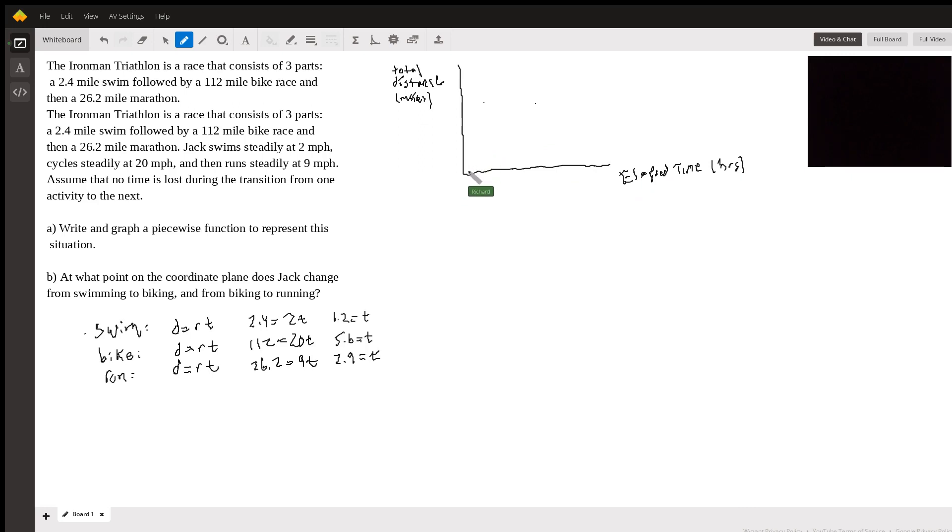And this is going to be in hours because those are the units that are given to us. So let's start him off swimming. Obviously, we're starting at the origin. At zero time, he's traveled zero distance. So we know that's a point. Fill that point in. And then we know that 1.2 hours later, he will have traveled 2.4. He will have swam 2.4 miles. So we'll give this a 1.2 here. And he will have the swimming piece is 2.4 miles. So we'll just put a dot here and then we'll connect the dots. So that's swimming.